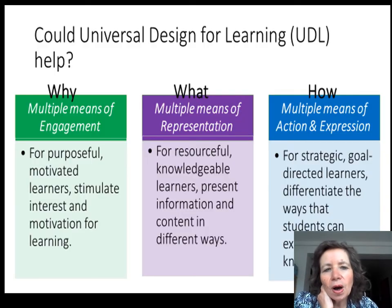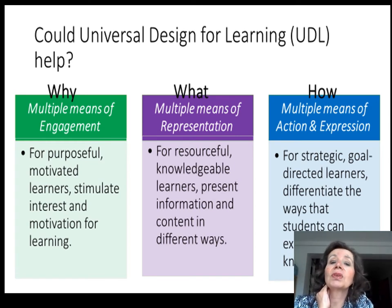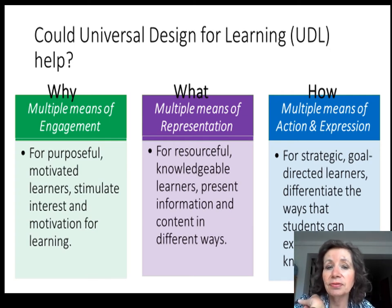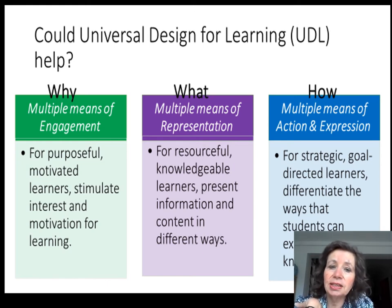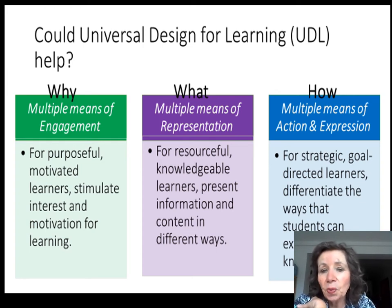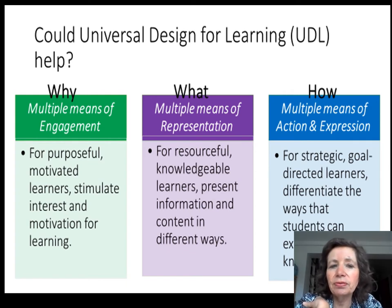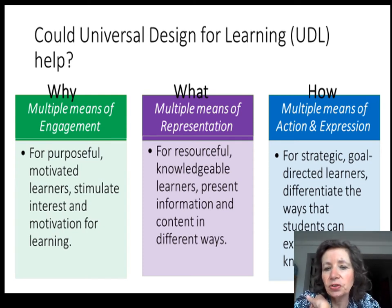Universal design for learning — the why, what and how — is about multiple means of engagement, multiple means of representation, and multiple means of action and expression, which is breathtakingly obvious, really. Multiple means of engagement gives learners with different learning styles and different learning requirements the opportunity to engage with learning. Multiple means of representation is about providing learning in different ways and enabling people to respond to learning in different ways, so it's not all having the same assignment to do in exactly the same way. It's responsive to people's different requirements so that learning can be demonstrated in various ways.